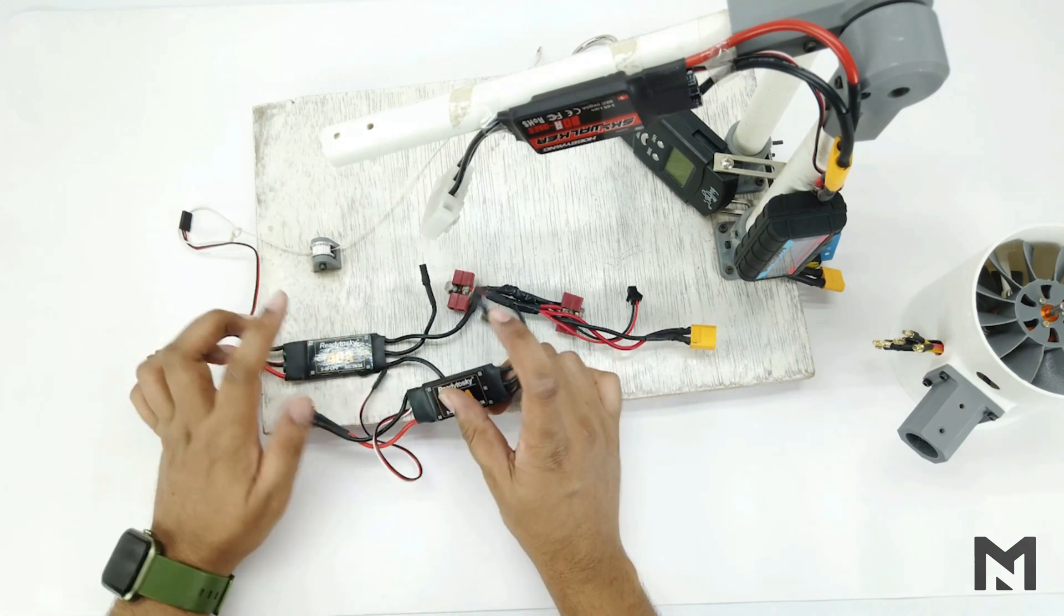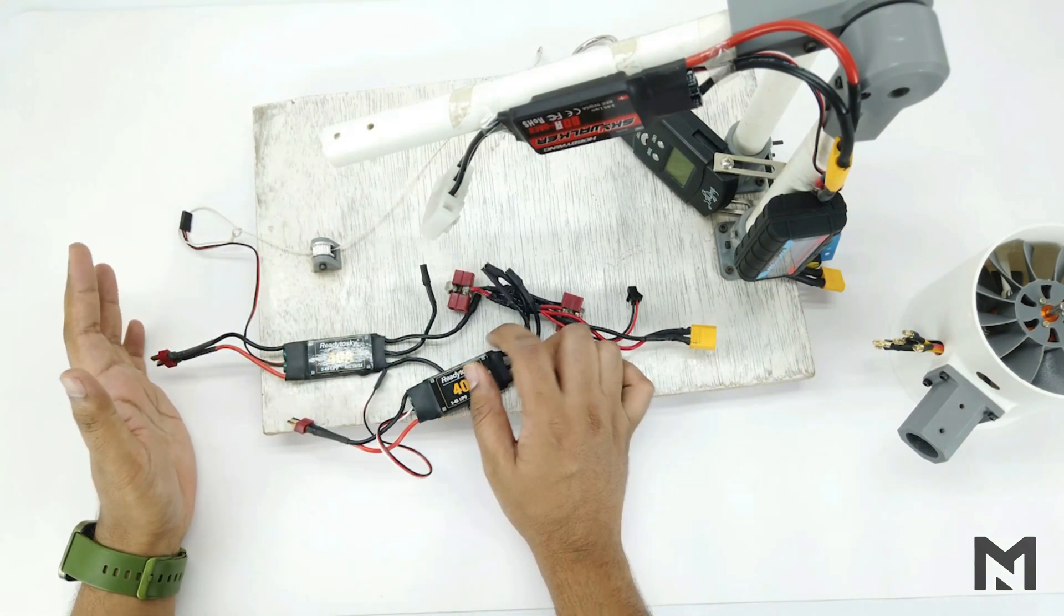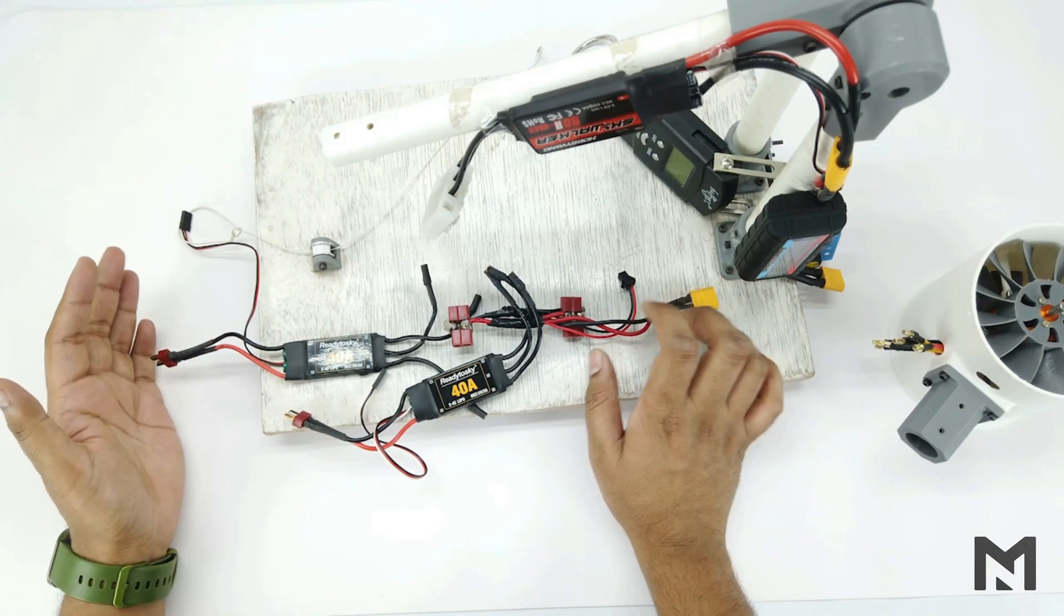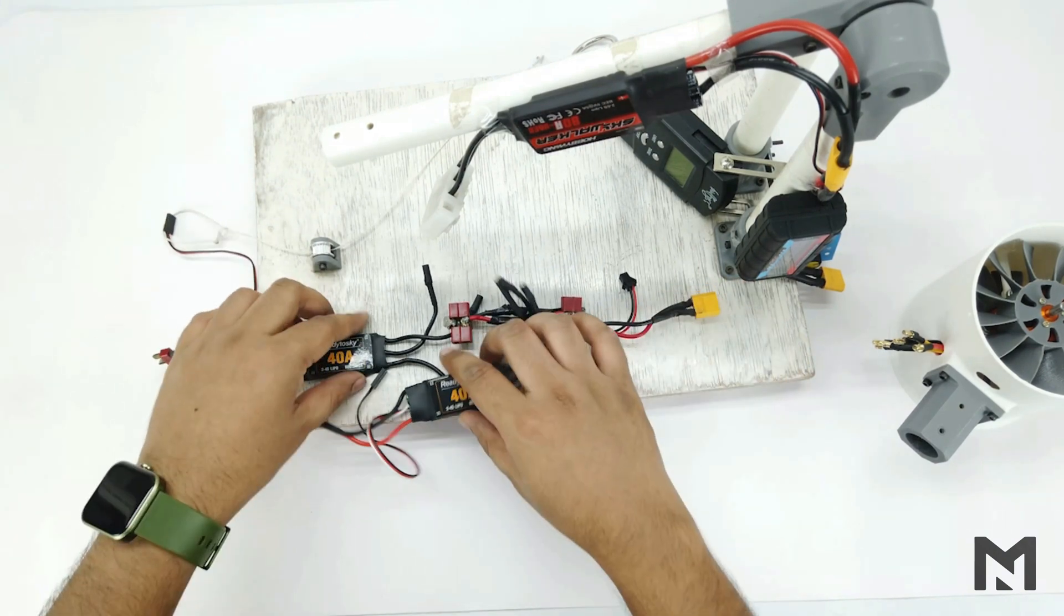But since both ESCs will give me a total current limit of 80 amperes, I will limit my maximum current up to 60 to 70 amperes for safe handling using watt meter.